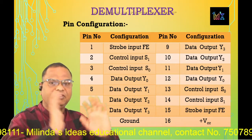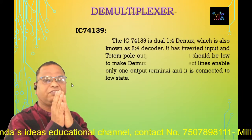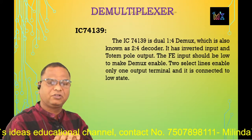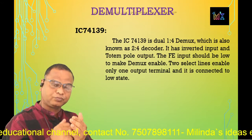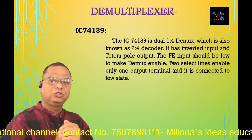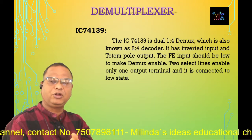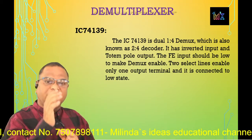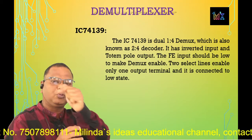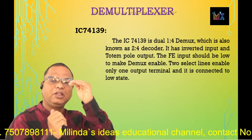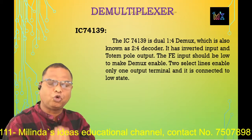Pin 16 is VCC, plus 5 volt DC supply connected to this terminal. IC 74139 is a 1-to-4 demux. In this IC there are two separately and individually controlled demuxes — demux 1 and demux 2 — each with separate data and control inputs. The strobe input F̄Ē itself is considered as the data input. The strobe input is active low, which means when the strobe input is low, the output of the circuit becomes active.